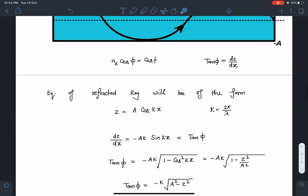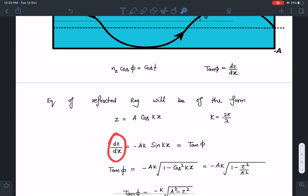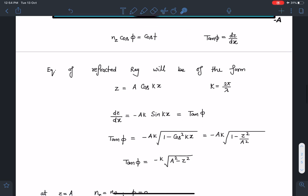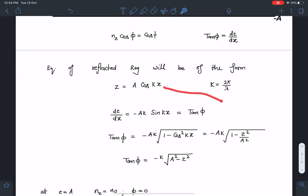Now I can find out the value of dz by dx. So that is going to be minus ak sin kx which is also tan phi. So tan phi value I can substitute now. I can adjust this in terms of z coordinate. So that is minus ak root of sin kx, I can write as root of 1 minus cos square kx. So I am getting tan phi as a function of z which comes as minus k root of a square minus z square.